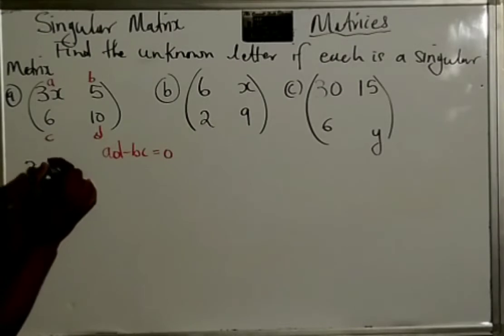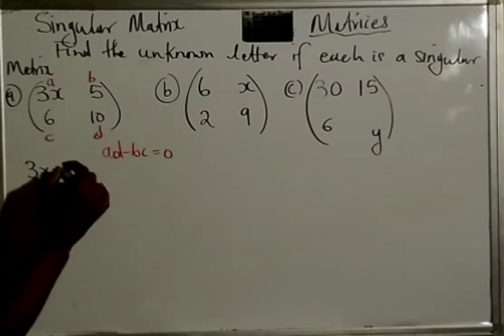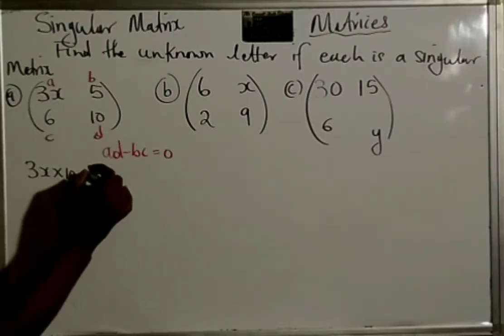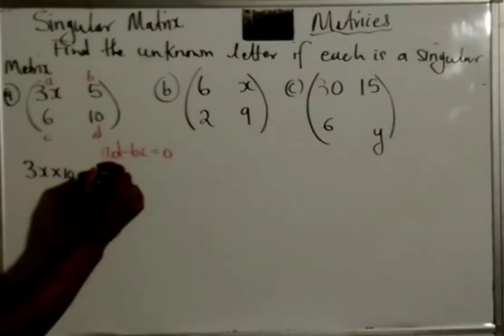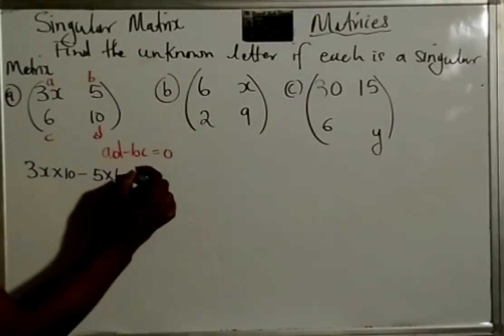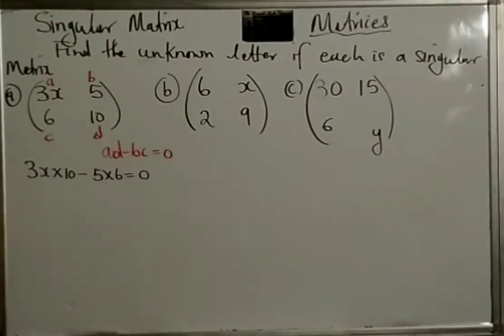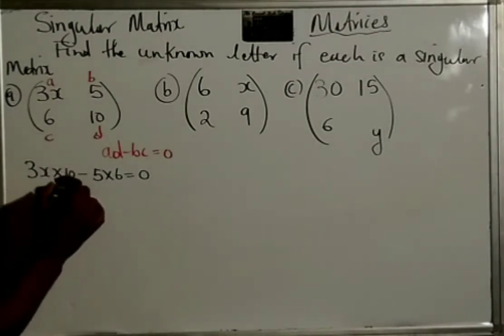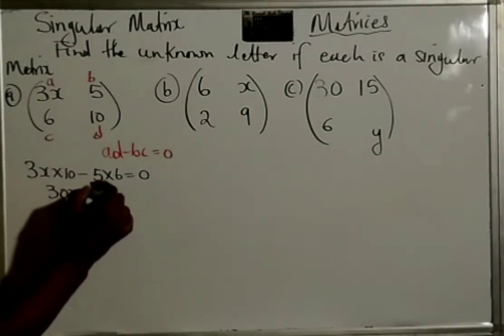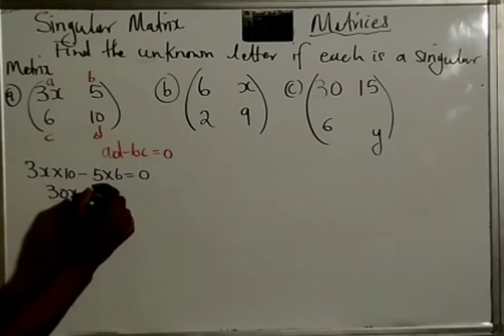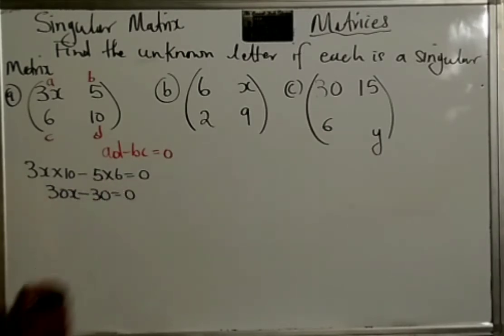So, it will be 3X times 10, so it's the first diagonal, minus 5 times 6, and that is equal to zero. So, 3X times 10 will give us 30X, 5 times that will give us negative 30, and that is equal to zero.